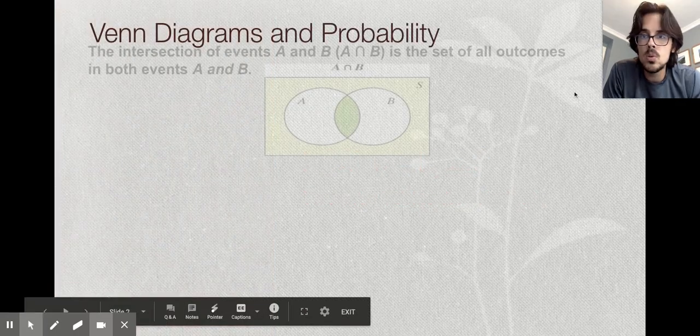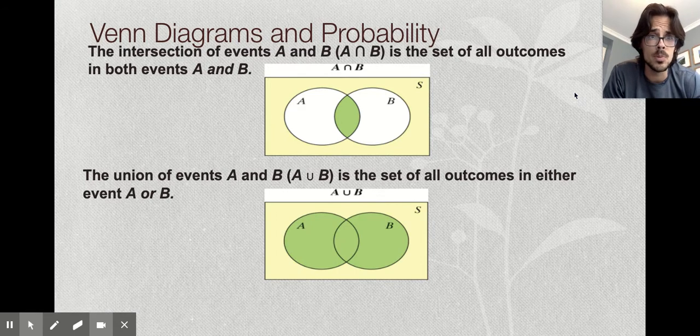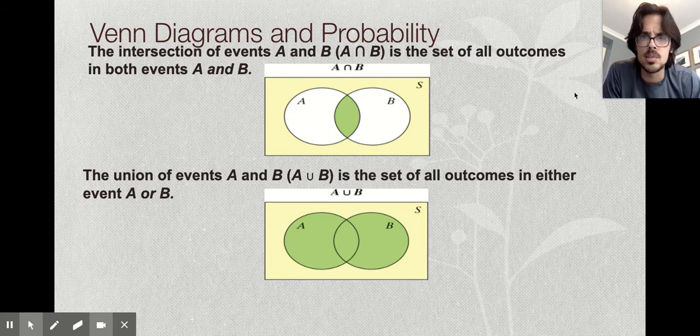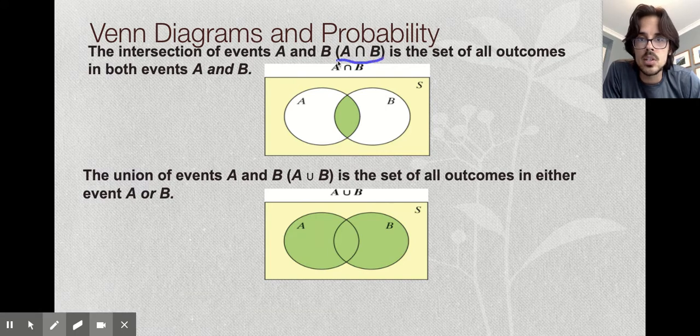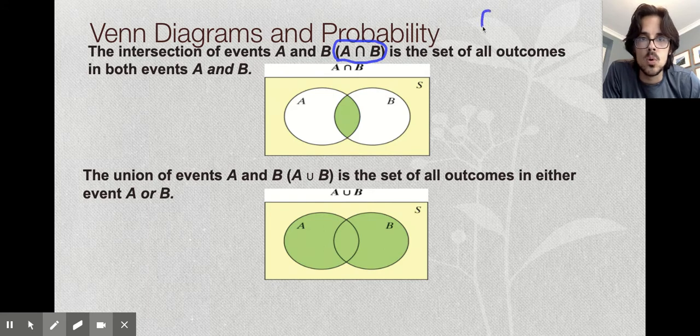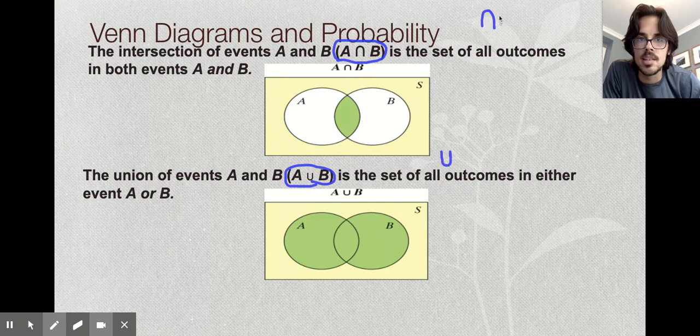When we do probability questions, we talk about OR and AND. In Algebra 2 I didn't use these symbols with you, but maybe you've seen them before, like in a geometry class. We have what's called the intersection and the union. Intersection is this little symbol right here, looks like an upside-down U or an N. And then union is this symbol, which is like a U.